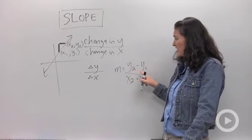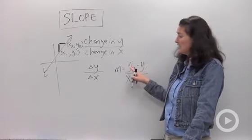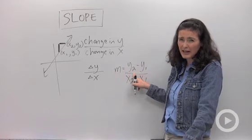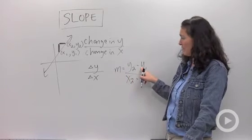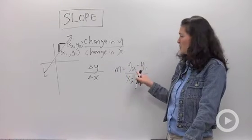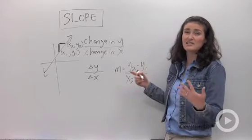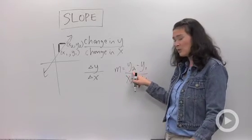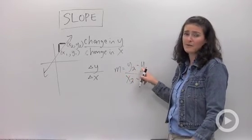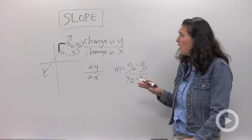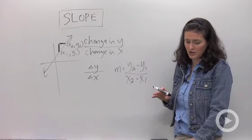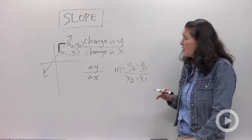And these little numbers down here are tricky. It doesn't mean take your y value and multiply it by 2 or take your y value and multiply it by 1. What it means is we're just notating using what's called a subscript. This is my second y value. I'm subtracting my first y value. And we'll get into that more later as you guys start your homework problems.